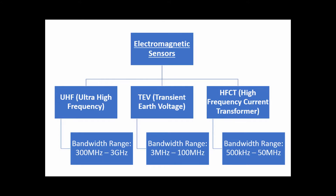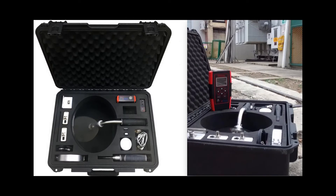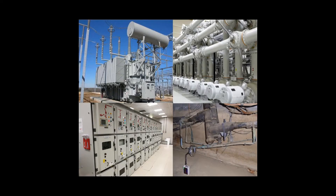The exact type of PD can be determined effectively using multiple on-screen data spectrum analysis. The P-Detector greatly simplifies and standardizes the routine online partial discharge testing procedure by using the intelligent patrol function. It is a very powerful and helpful tool for substations to quickly determine what the issue is and where it's located. The P-Detector is mainly used to test medium voltage and high voltage switchgear, transformers, power cables, and GIS.